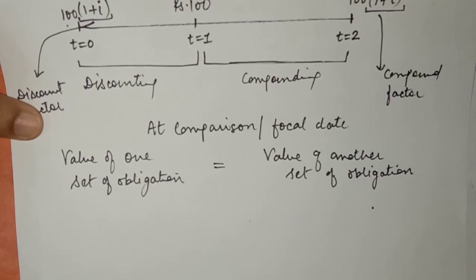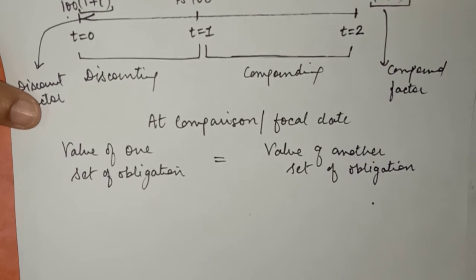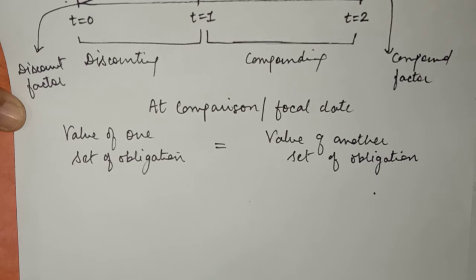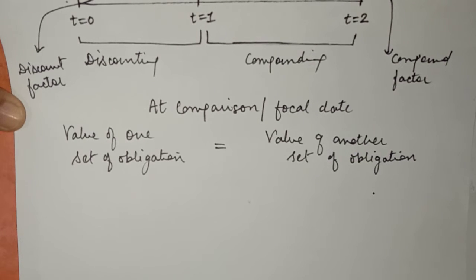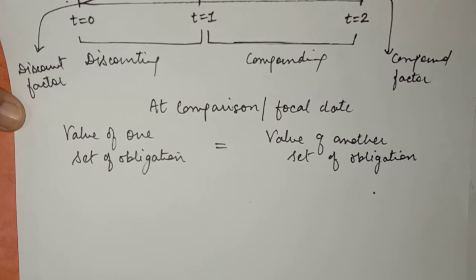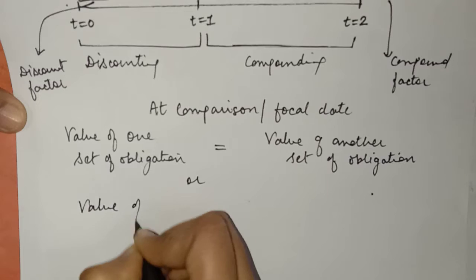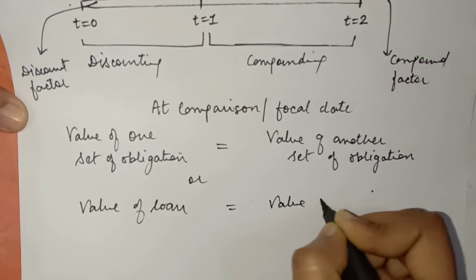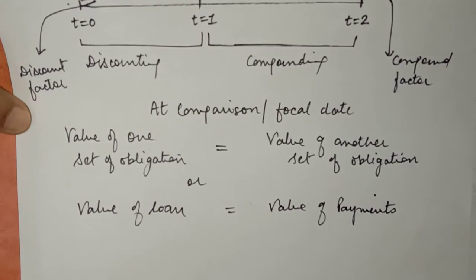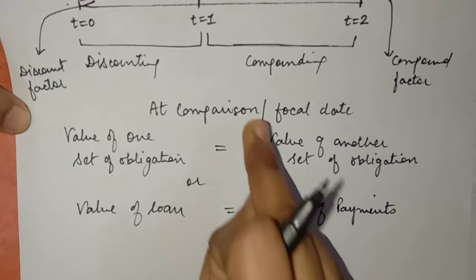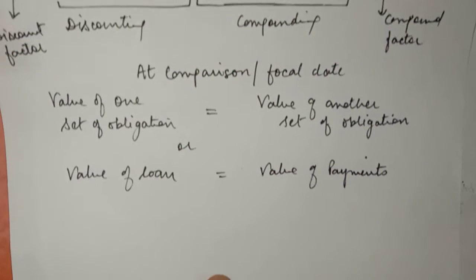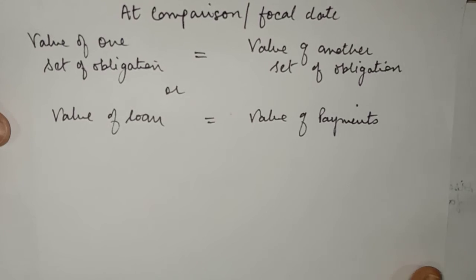For example, we have a loan of Rs. 100 which is due in 5 years. In place of that loan, I would like to make payments in the form of two installments — one today and another after 6 years. The two sets of obligation in this example are: one set is the value of the loan, and another set is the value of the payments. These can be equated if you bring those values to one point of time, that is the focal date or comparison date.